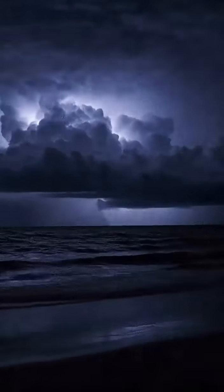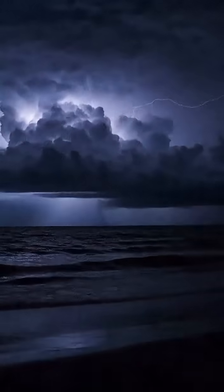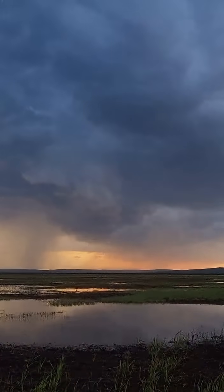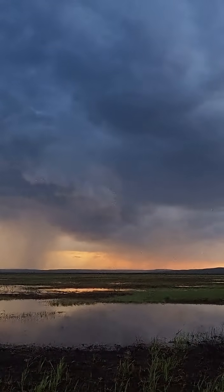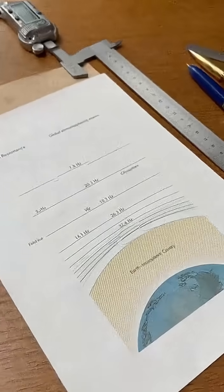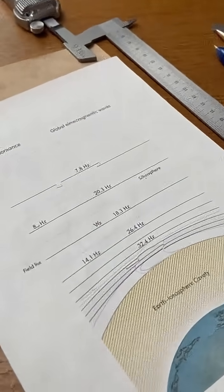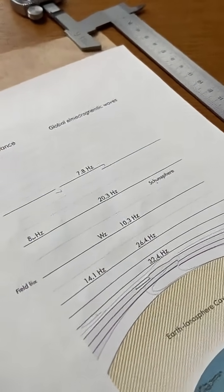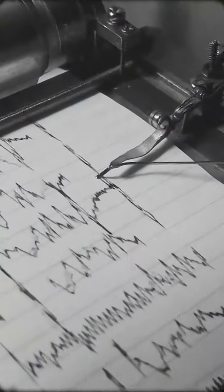Lightning hits the planet thousands of times a second. Those strikes generate electromagnetic waves trapped between the ground and the ionosphere. This is called the Schumann resonance, oscillating at about 7.8 hertz. In the mid-20th century,